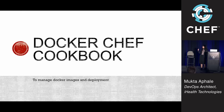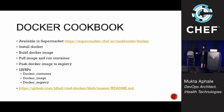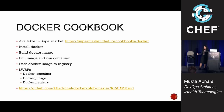That's where we went to using a Docker cookbook, which helps you manage Docker images and deployment. There's a Docker cookbook available in the supermarket — you can install Docker, build Docker images, pull and run containers, and push images into your registry. It has three important LWRPs: Docker container, Docker image, and Docker registry.